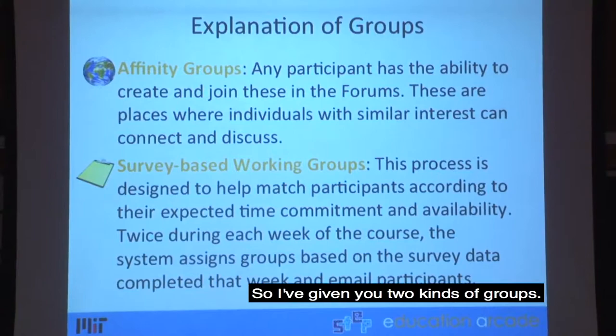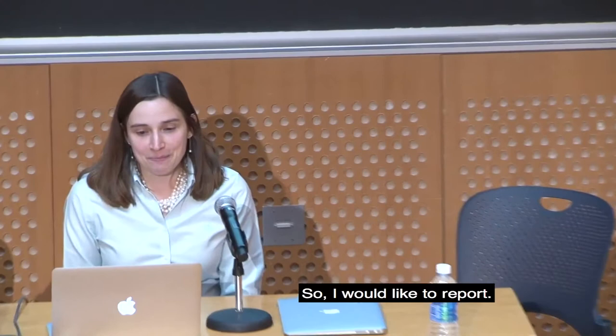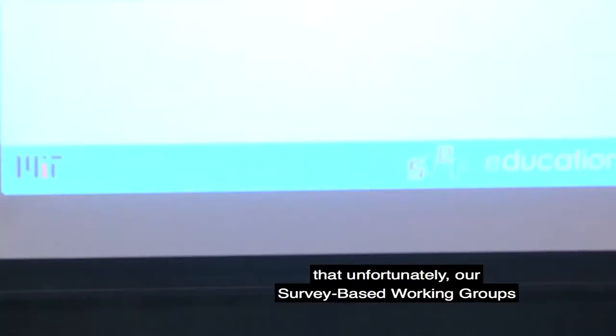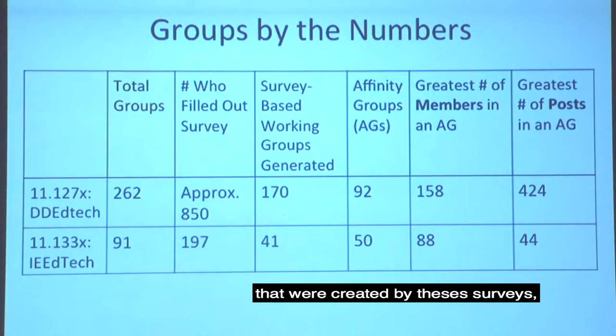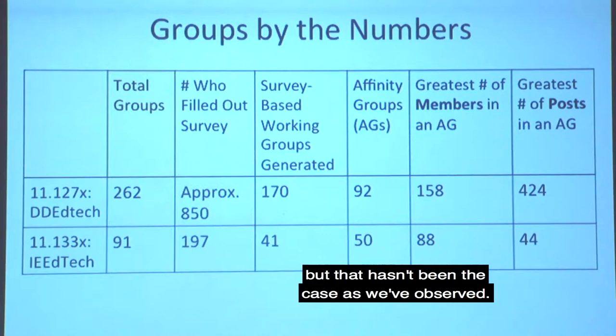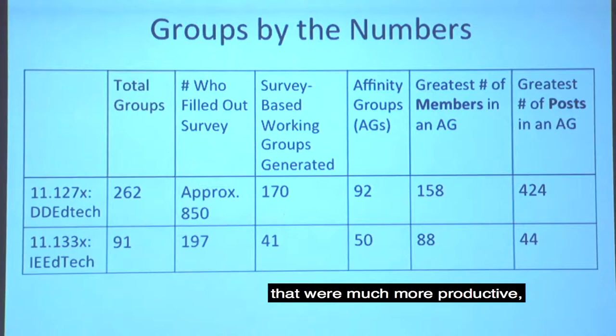I'd like to ask the audience: which type of group do you think was more popular with participants — affinity groups or survey-based working groups? I would like to report that unfortunately our survey-based working groups were overall not as popular and not as successful. These groups sometimes started with a few intro posts — hello, my name is so-and-so, I'm a math teacher in Wisconsin — but didn't tend to continue beyond these introductions. Meanwhile, some affinity groups were much more productive, where participants shared coursework, interests, and resources together.